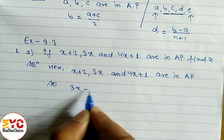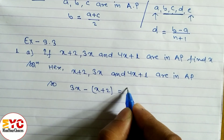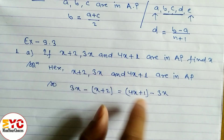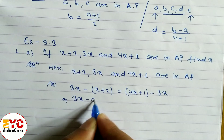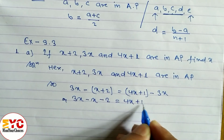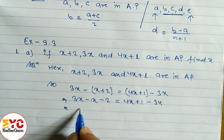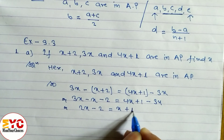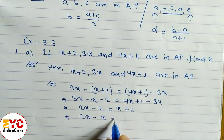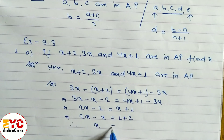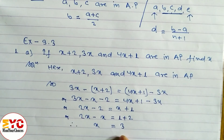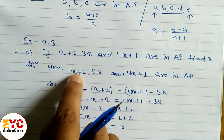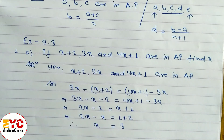So we write: 3x − (x + 2) = (4x + 1) − 3x. Opening the brackets: 3x − x − 2 = 4x + 1 − 3x, which gives 2x − 2 = x + 1. Rearranging: 2x − x = 1 + 2, therefore x = 3. When terms are in arithmetic progression, the differences are equal.